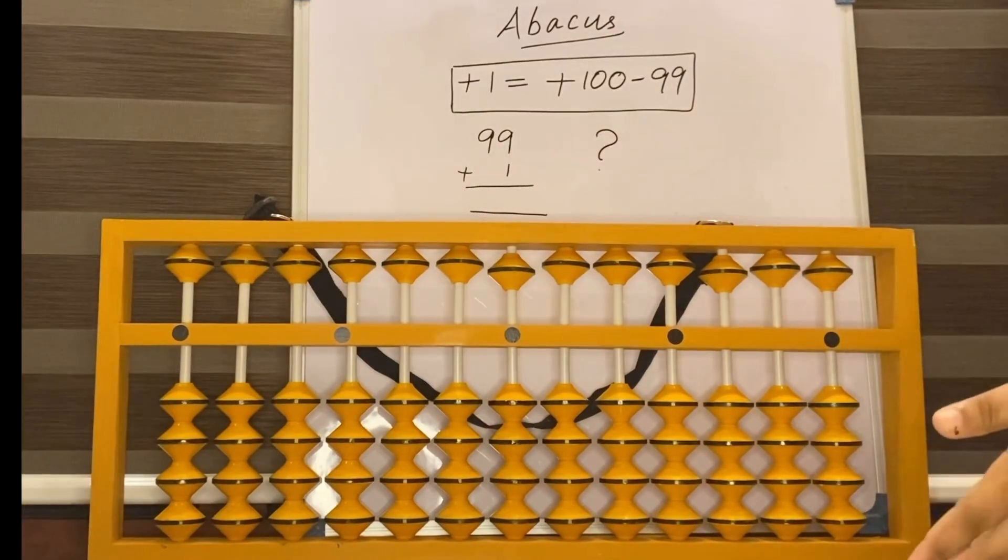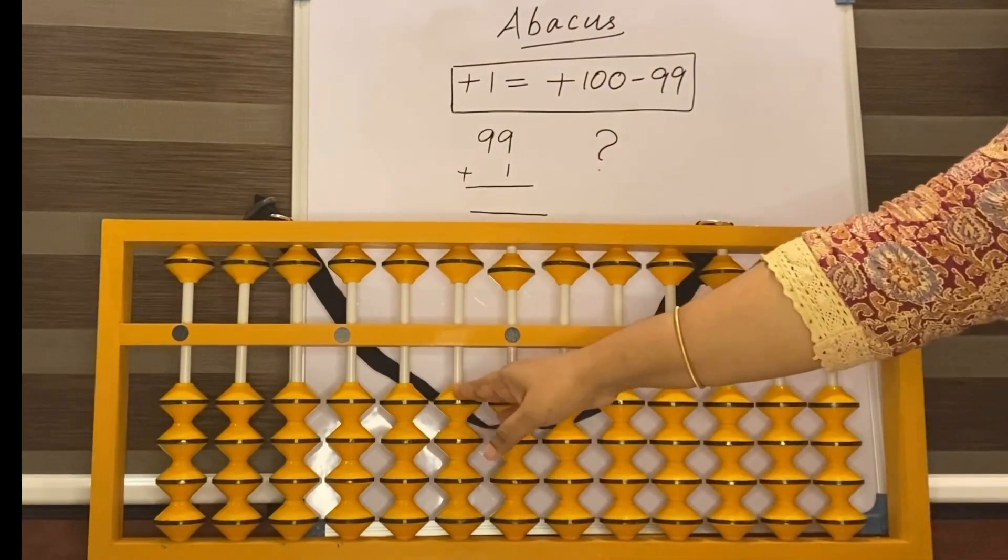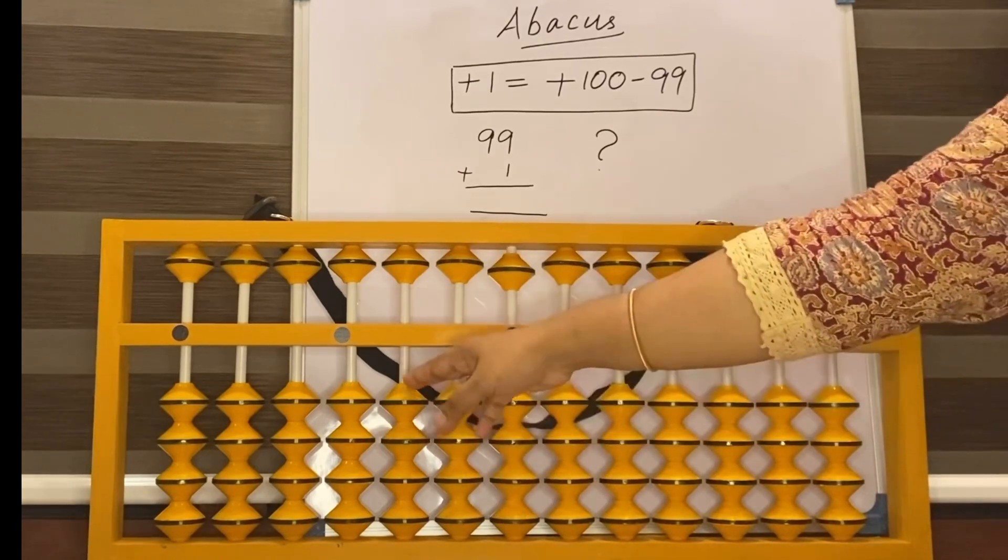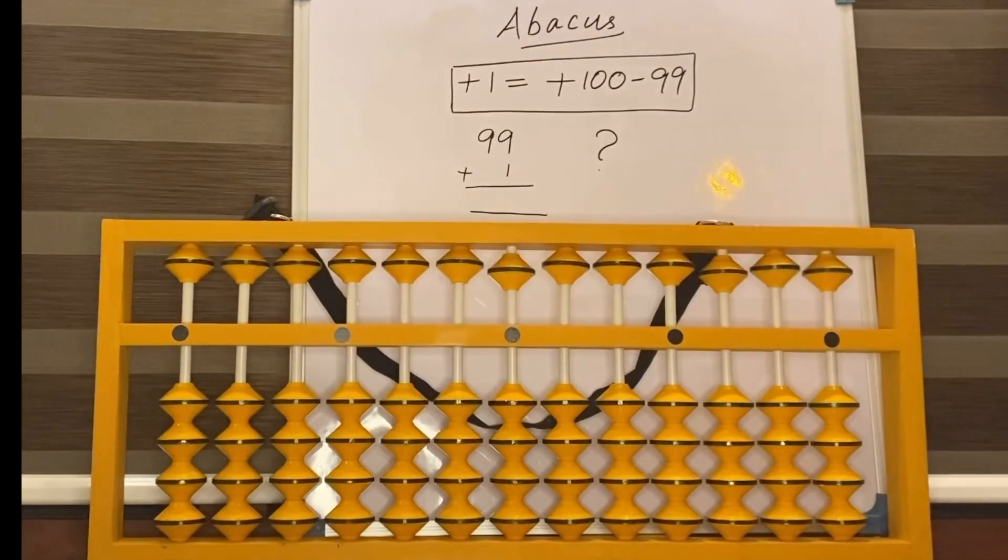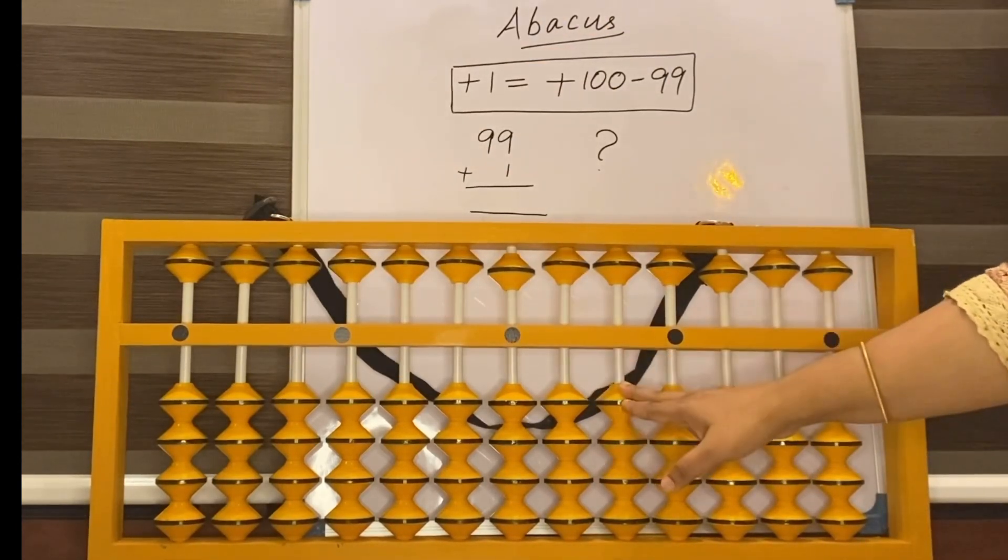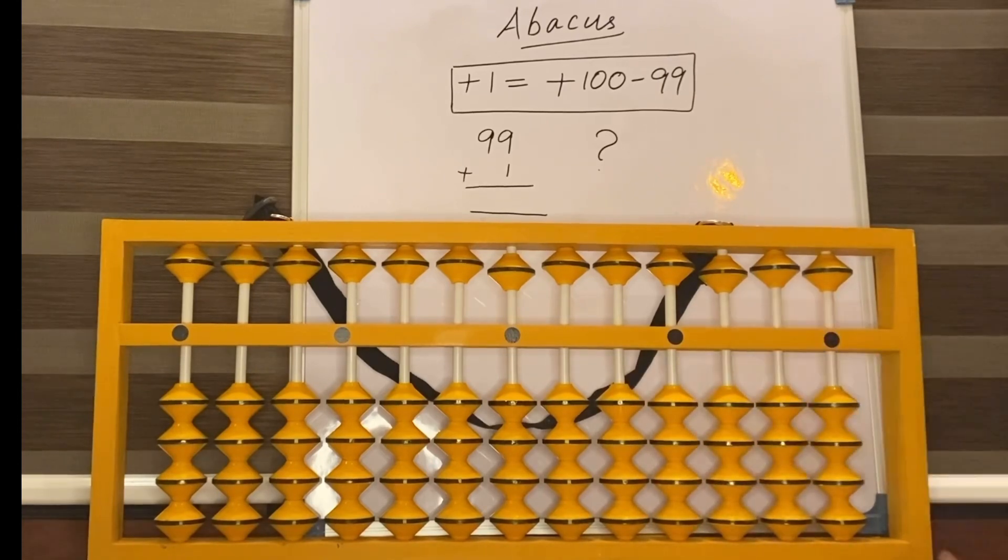This is called 1 space, that is 1 to 9, then 10 space, 10 to 90, 100 space, 100 to 900, 1000, 10,000, lakh, 10 lakh, like that. The other side is decimals: 0.1, 0.01, 0.001, like that.